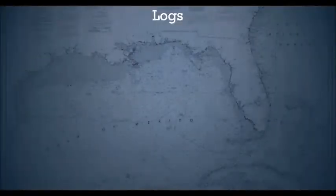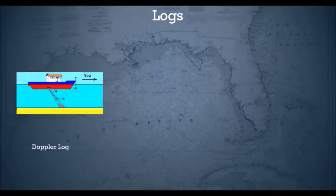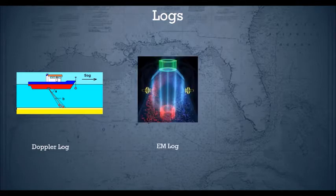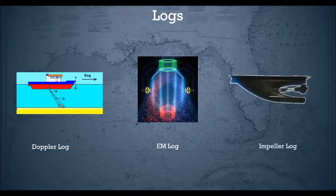These days, we have digital means to measure the speed. You have the Doppler log, which works on Doppler shift frequency. You have EM logs — electromagnetic logs — and you also have impeller logs.